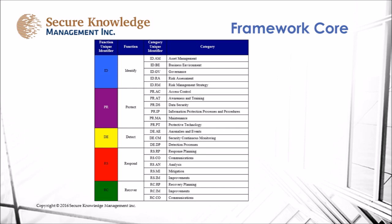Core Framework: Under the core framework we break out the five primary domains. Under Identify we have sub-processes for asset management, business environment, governance, risk assessment, and risk management strategy.